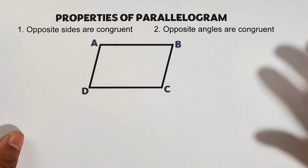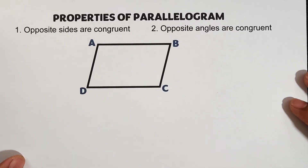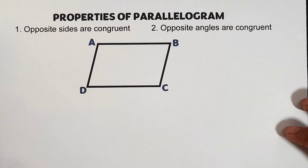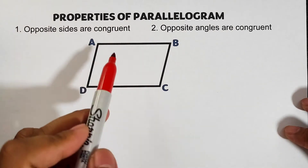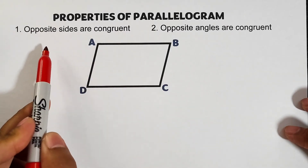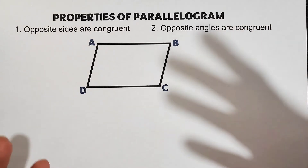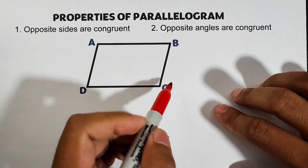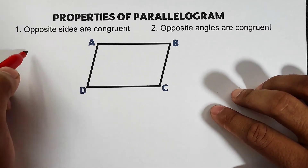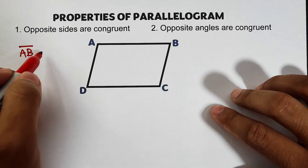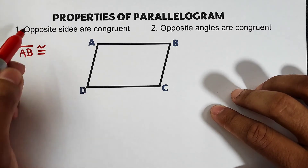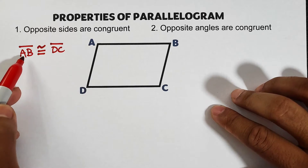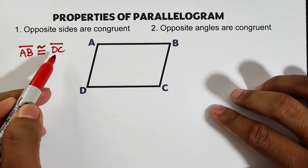The first property: opposite sides are congruent. Using parallelogram ABCD, the opposite sides are side AB and side DC. Based on this property, side AB is congruent to side DC — this is the symbol for congruency.